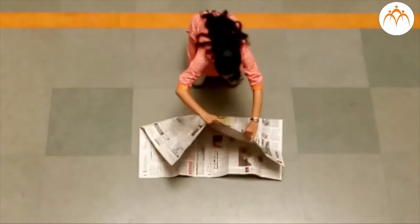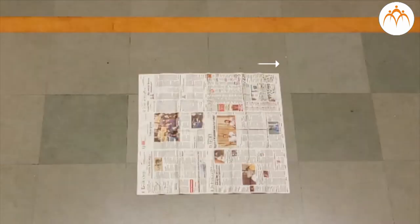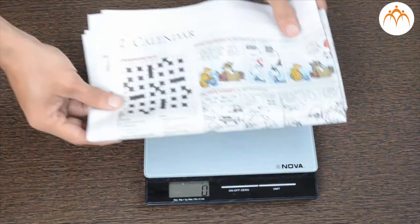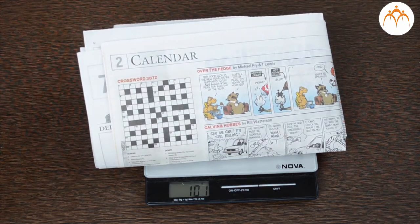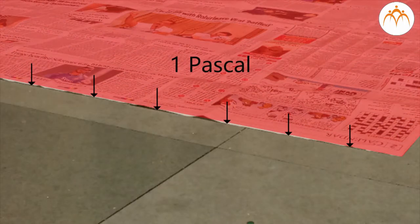If the dimension of the paper is 1 meter by 1 meter and it weighs 100 grams, we can say that it is applying a pressure of 1 Pascal on the table.